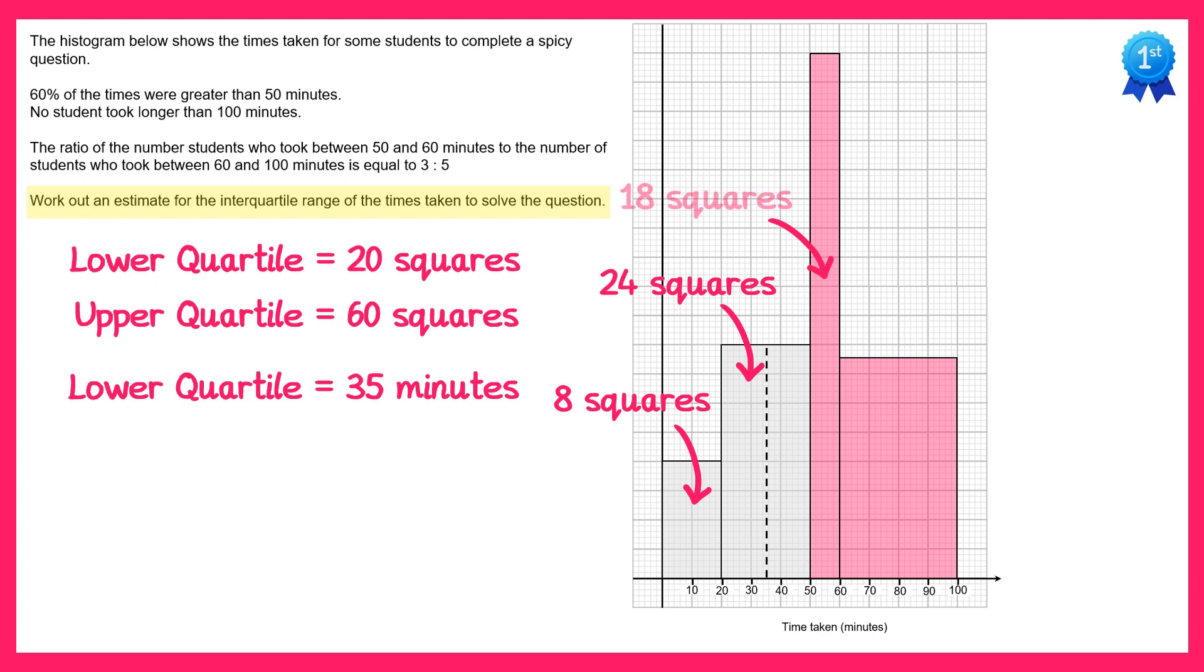Now for the upper quartile. This bar here has 18 squares, so if we take 8 squares, 24 squares and 18 squares that's a total of 50 squares. So we need 10 of the squares from the final bar and the final bar has 30 squares in it. So we want one third of this bar. One third of the way from 60 to 100 is 13.3 recurring, so if you go 13.3 recurring in from 60 you end up at 73.3 recurring.